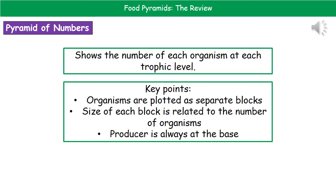They have asked you to draw one of these pyramids of numbers before, and they will give you a little printed bit of graph paper in your exam booklet. Make sure you use it. The reason they've given you the graph paper is so that you will use an appropriate scale — so one little square equals ten organisms, something along those lines.